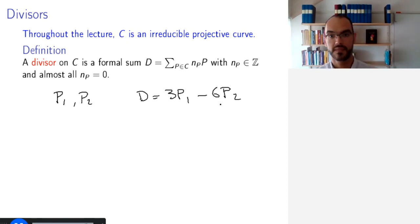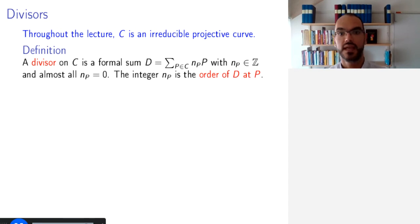And the idea in the back of our mind is that somehow there is some function having a zero of order 3 at P1 and a pole of order 6 at P2. But a divisor is more general than that. It is just such a formal sum. And the integer NP, the coefficient of the point P, is called the order of the divisor at this point.